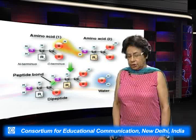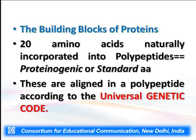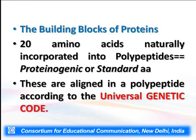If I talk of the functions of amino acids, they are the basic constituents of enzymes, hormones, antibodies, antibiotics, and heme — which is part of hemoglobin — so they play a variety of roles in metabolism. There are 20 amino acids which occur in nature and are naturally incorporated into polypeptides; these are known as proteogenic or standard amino acids. Their alignment in a polypeptide follows the universal genetic code.